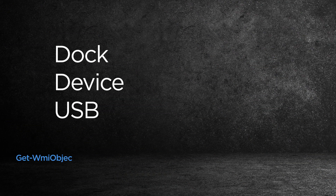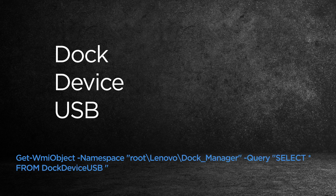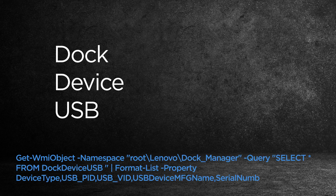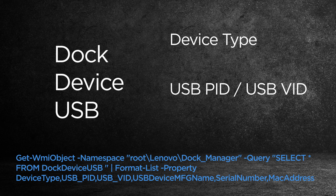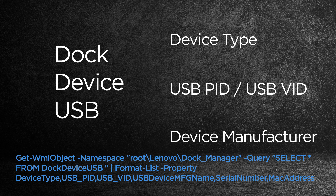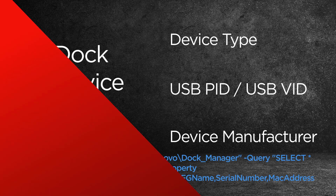The Dock Device USB class is created when a USB device is inserted in a supported dock. Properties queryable inside the class include device type, USB PID, USB VID, and USB device manufacturer name.